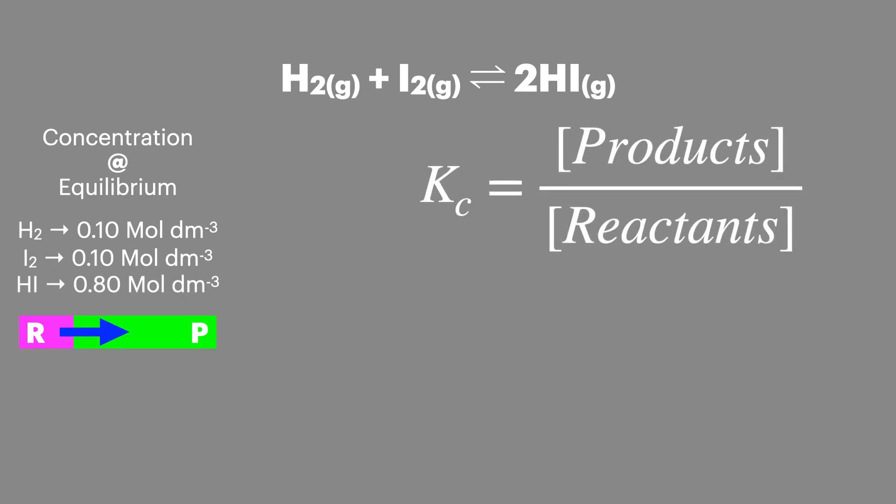We'll start with our standard equation showing the concentration of products over reactants and then we'll write out our expression for our chemical equilibrium. Notice how HI, hydrogen iodide, is to the power of 2. This is because in the reaction two HI molecules are formed. We can then substitute in our concentrations and calculate a value of Kc to be 64.